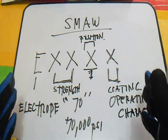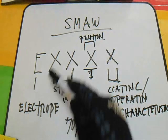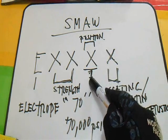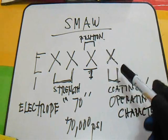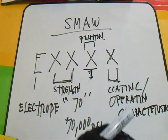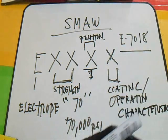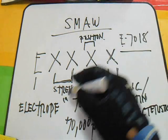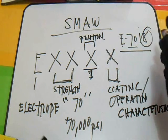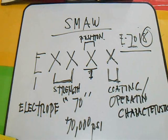So in summary: E = electrode, XX = strength (e.g., 70 = 70,000 psi deposit weld metal), the next digit = position, and the last digit = coating operating characteristic. For example, E7018 — E is electrode, 70 is the strength, 1 is the position (any position), and 8 is the coating operating characteristic.